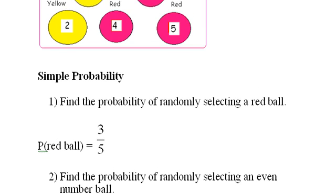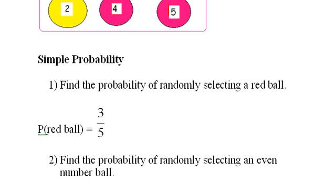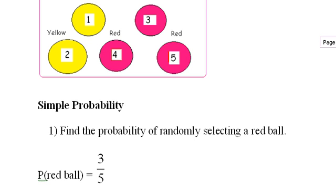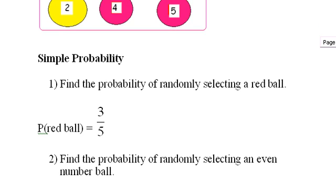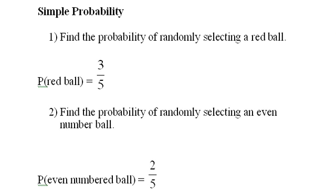The second problem: find the probability of randomly selecting an even numbered ball. Again, we have five balls in the sample space, and how many of them are even? There's a two and a four. So there are two possibilities for drawing an even numbered ball. The probability of drawing an even numbered ball is two-fifths, or 0.4.